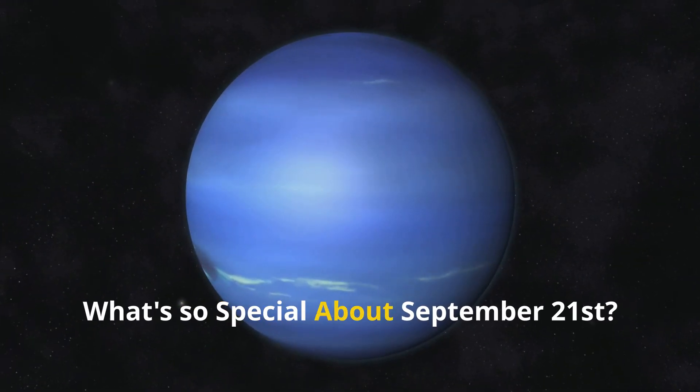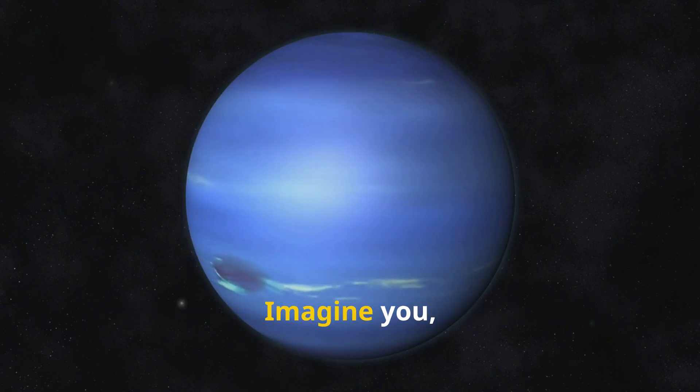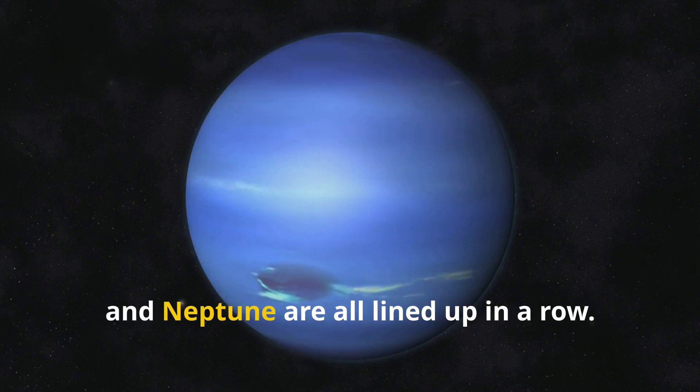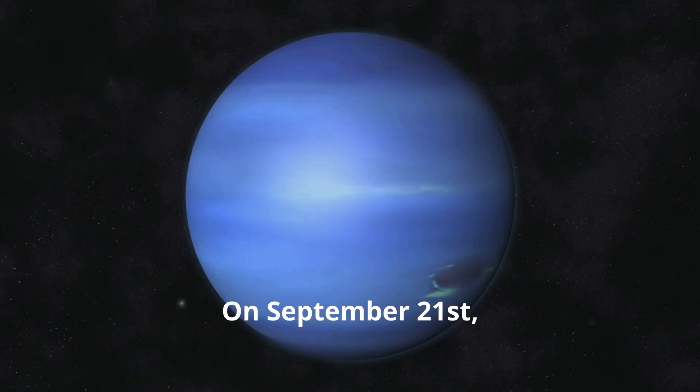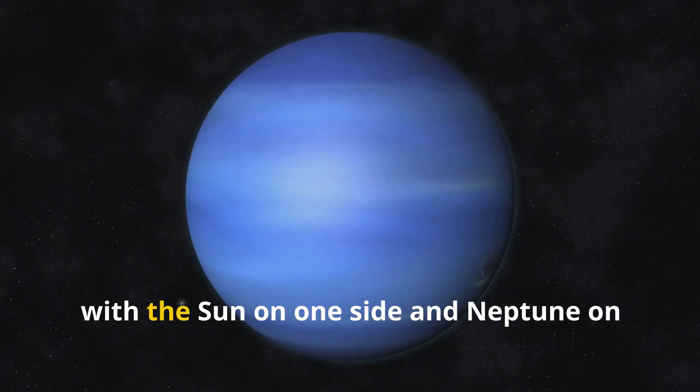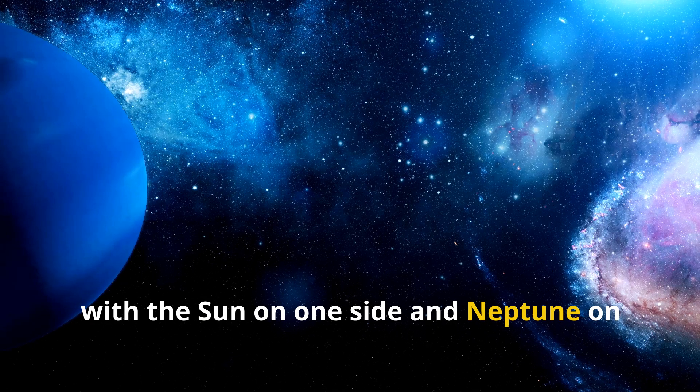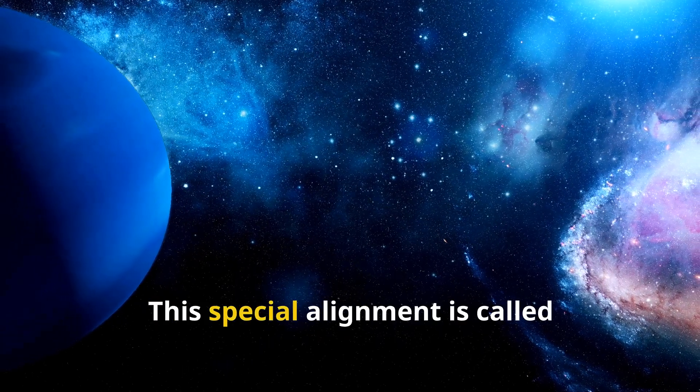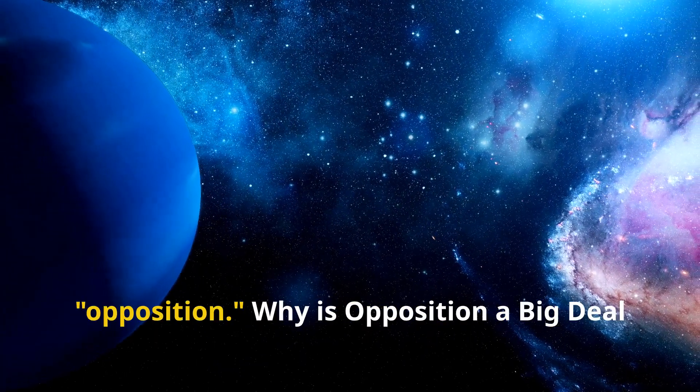What's so special about September 21st? Imagine you, the Sun, Earth, and Neptune are all lined up in a row. On September 21st, Earth will be right in the middle with the Sun on one side and Neptune on the other. This special alignment is called opposition.